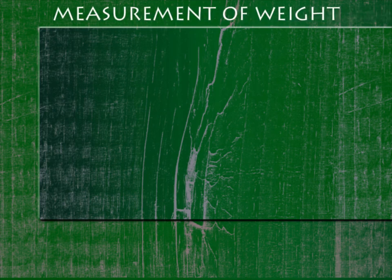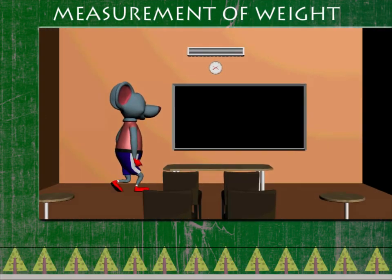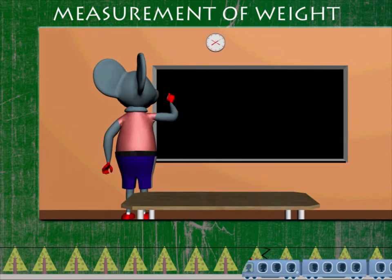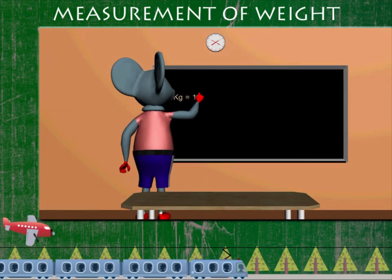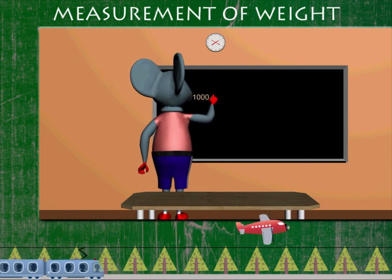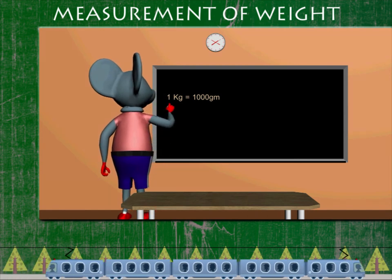Measurement of Weight. Robby Mouse is early in class to revise the unit of weight measurement. He writes on the board that 1 kilogram is made up of 1000 grams.